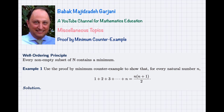Hi, this is Babak. In this video, I'm going to talk about a proof method for statements regarding natural numbers, like mathematical induction. If you remember, the validity of mathematical induction as a proof method relies on the well-ordering principle of the set of natural numbers. This is the same for this proof method, which is called proof by minimum counterexample.